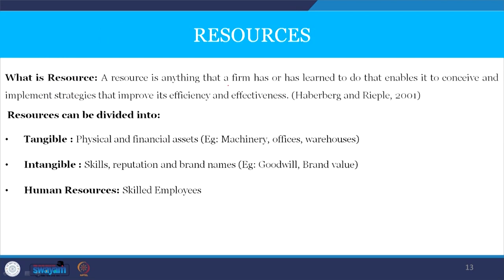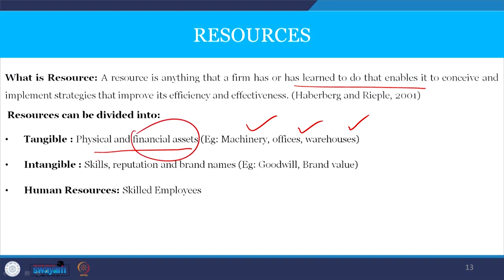A resource is anything that a firm has or has learned to do that enables it to conceive and implement strategies that improve efficiency and effectiveness. Resources can be tangible, intangible, or human resources. Tangible resources are physical and financial assets — machinery, office space, warehouses, land, capital, and financial strength. Intangible assets are the skill sets of employees, reputation, brand image, and the goodwill or corporate identity of an organization.